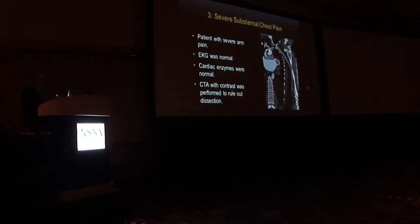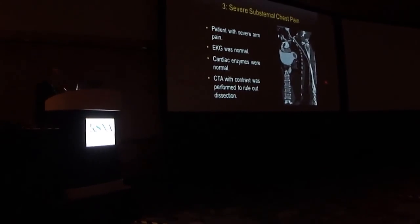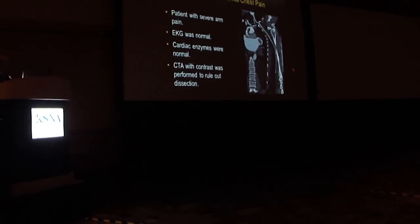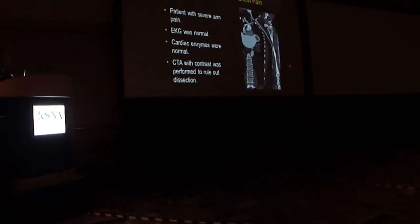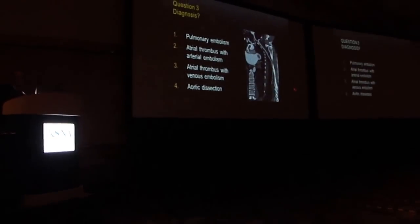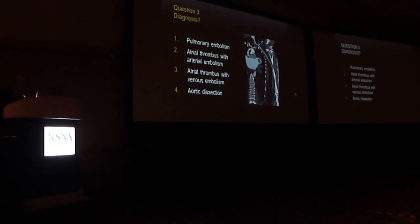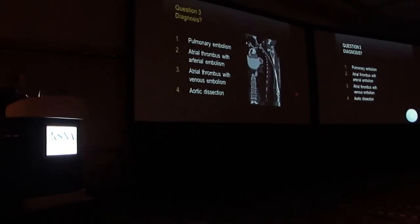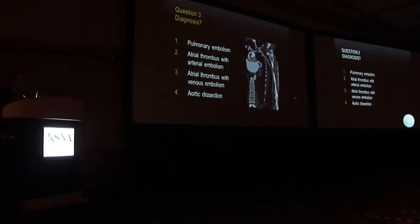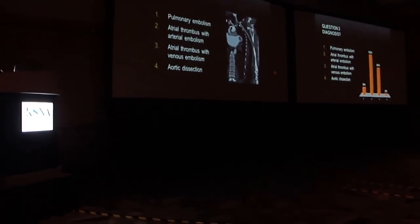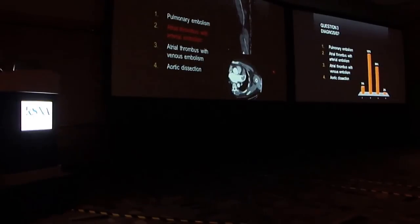Next patient with chest pain and arm pain. ECG was normal, cardiac enzymes were normal, and CTA with contrast was performed to rule out aortic dissection. Differential considerations were pulmonary embolism, atrial thrombosis with arterial embolism, atrial thrombosis with venous embolism, or aortic dissection. 52% correct — traps in life.